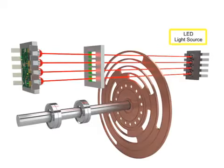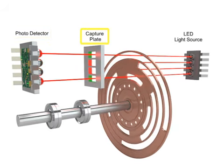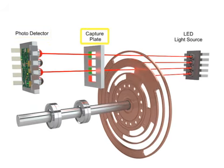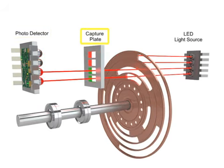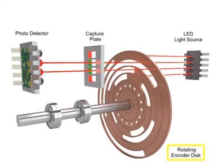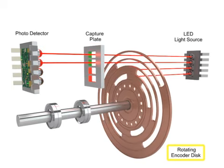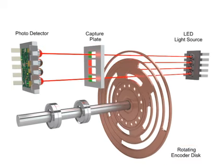A light source located on the opposite side of the photocells passes light through a capture plate. As the encoder disk rotates, light is either transmitted or blocked according to the pattern.